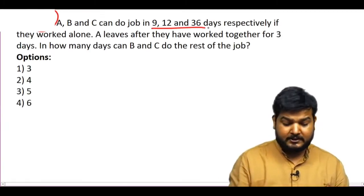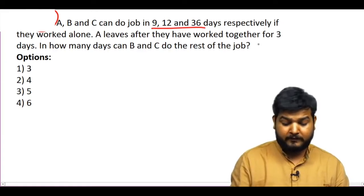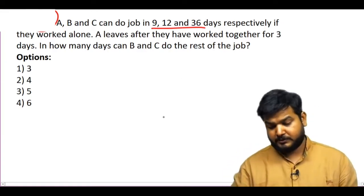A, B, C can do a job in 9, 12, 36 days if they worked alone. A leaves after they have worked together for 3 days. In how many days can B and C do the rest of the job?